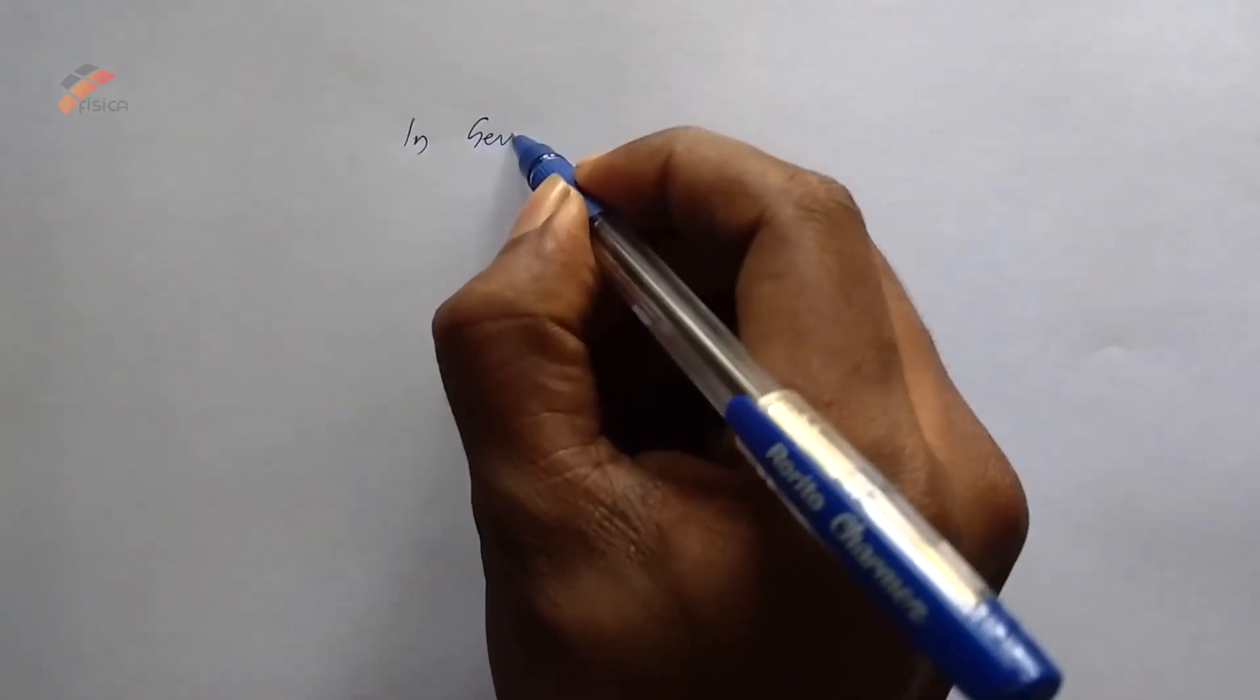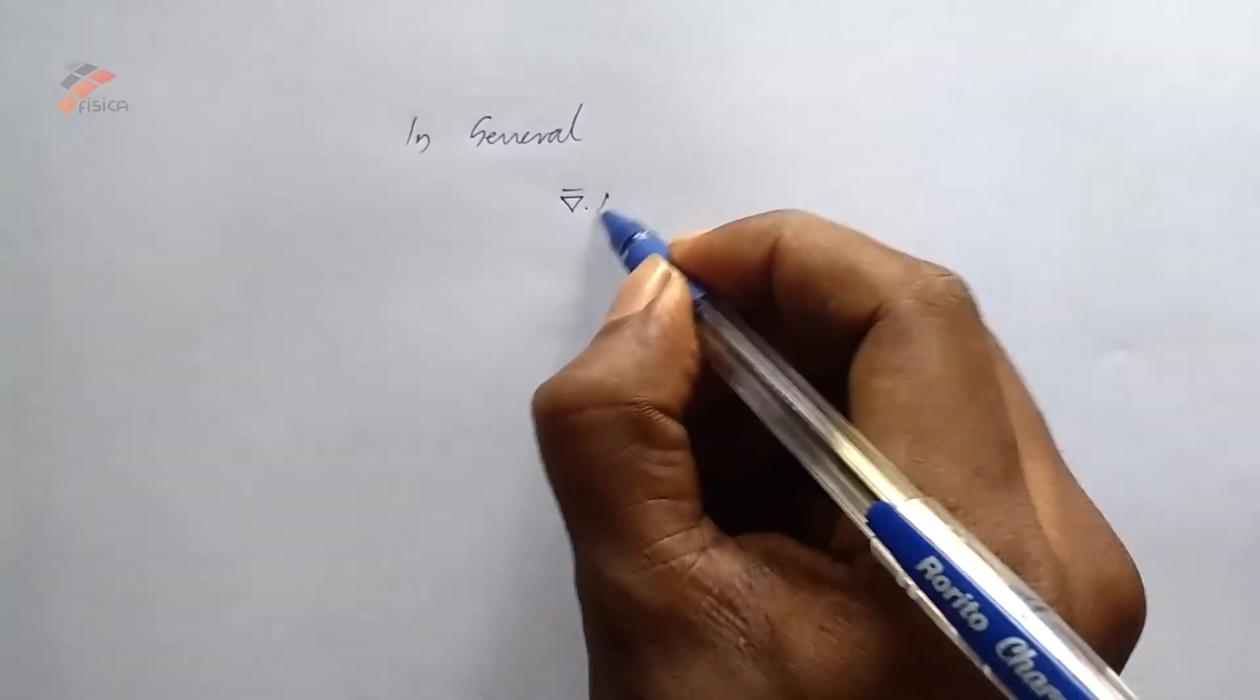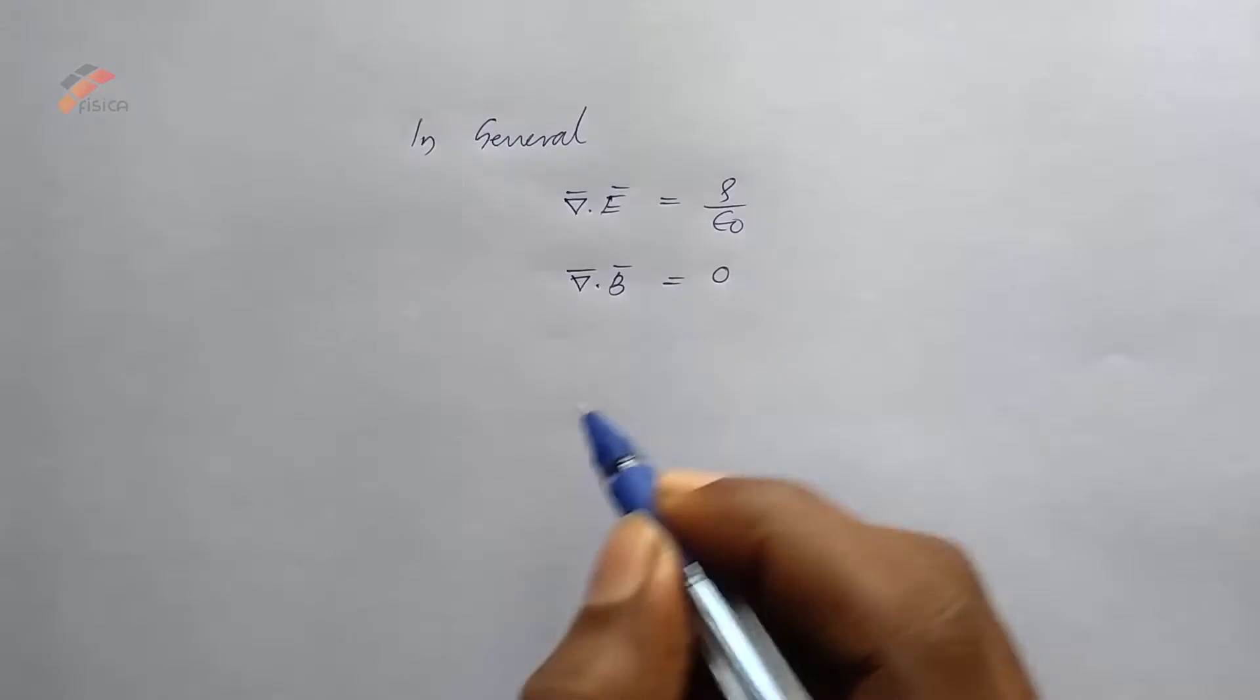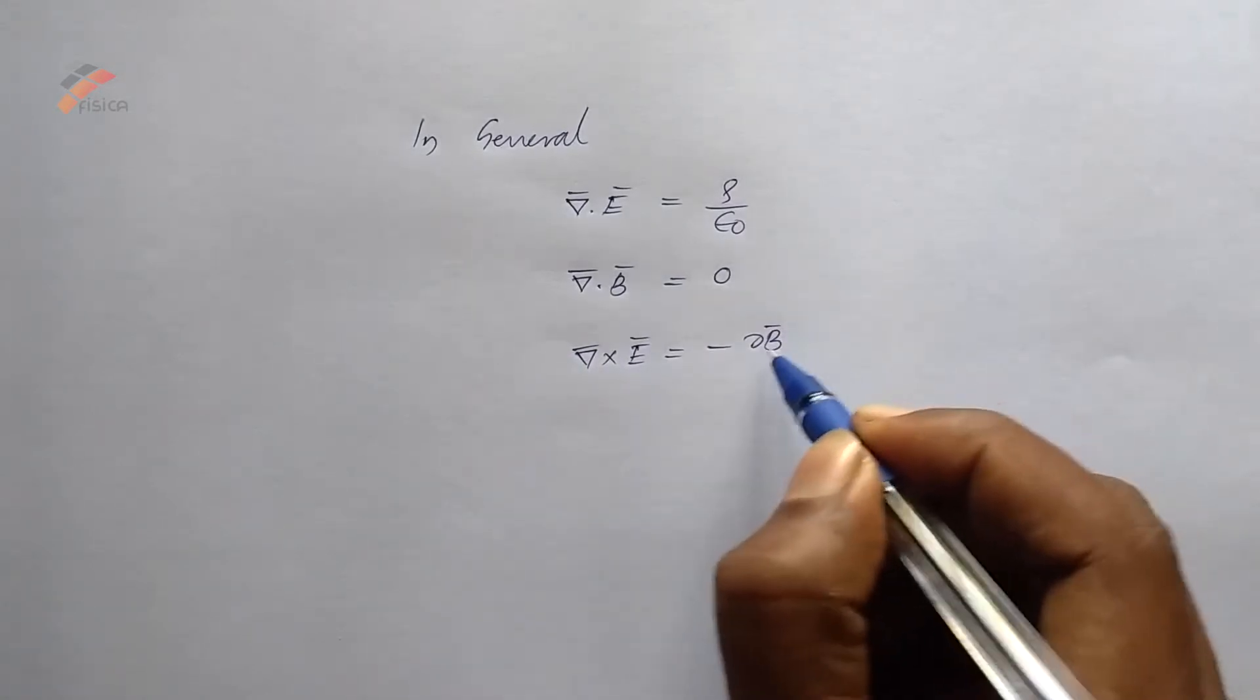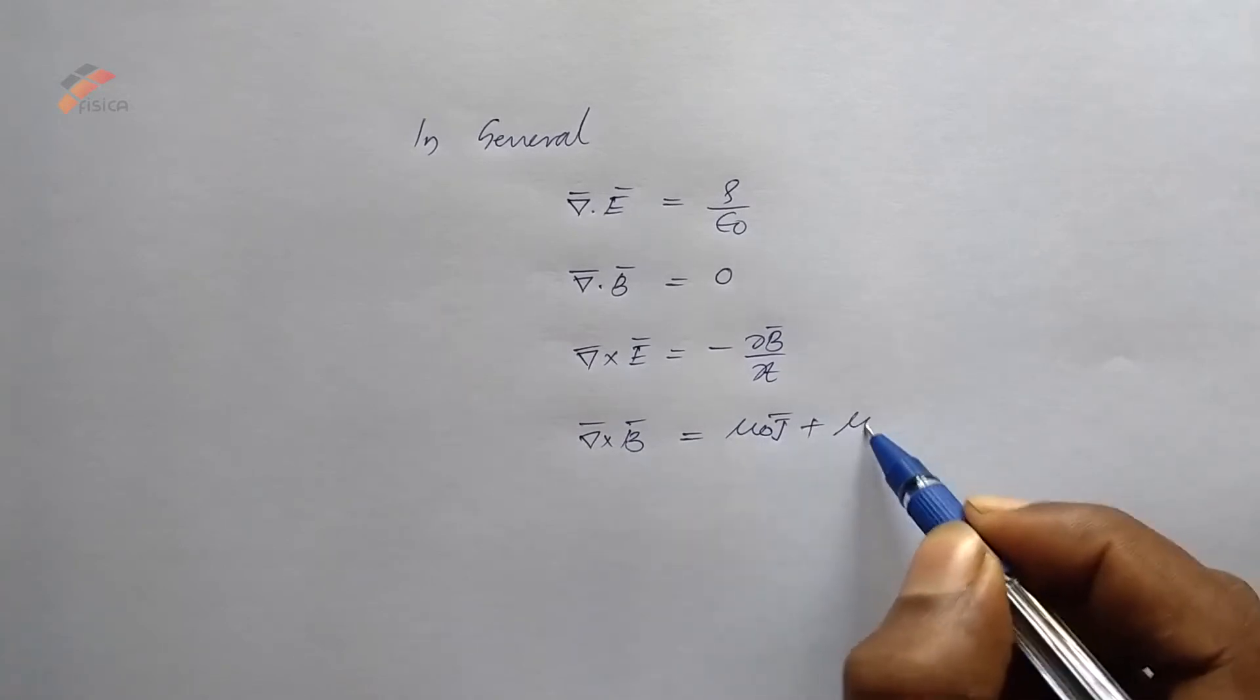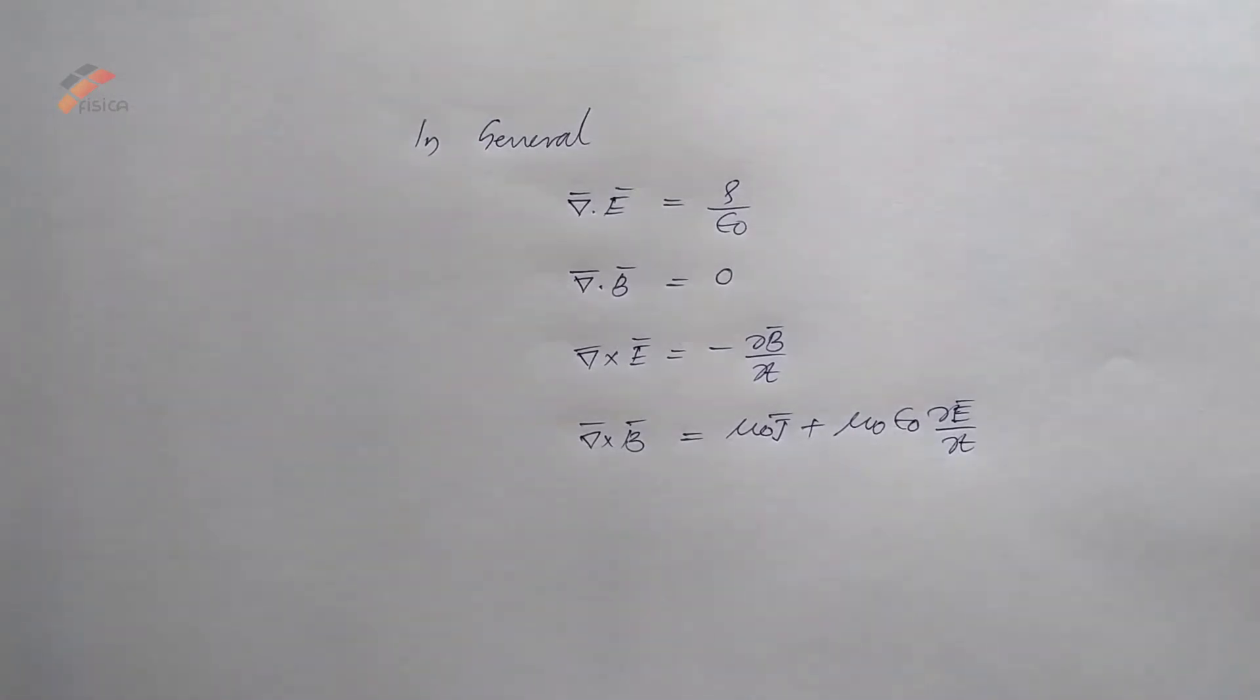Del dot E equal to rho by epsilon zero, del dot B equal to zero, del cross E equal to minus dB by dt, and del cross B equal to mu zero j plus mu zero epsilon zero dE by dt. These are Maxwell's four equations. In these equations, Maxwell summarized all the concepts of electricity and magnetism.